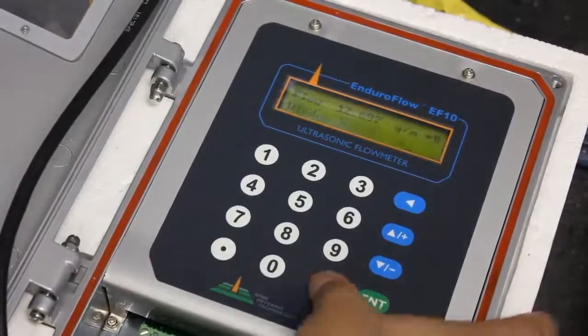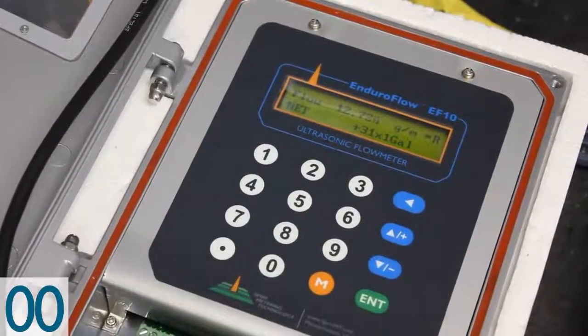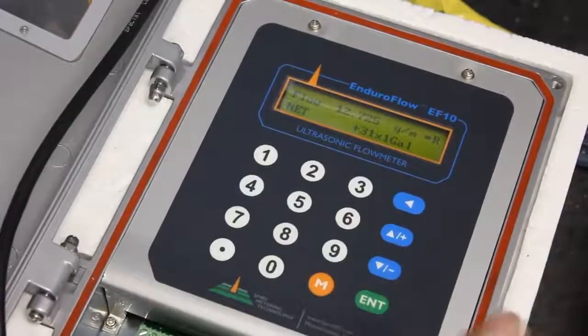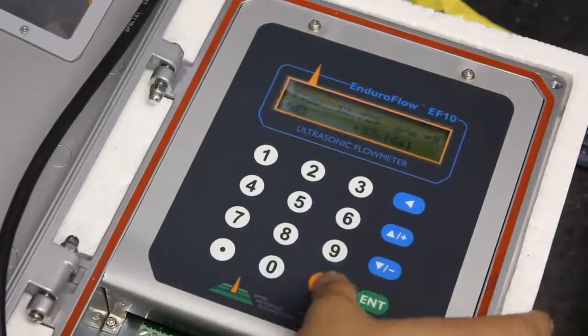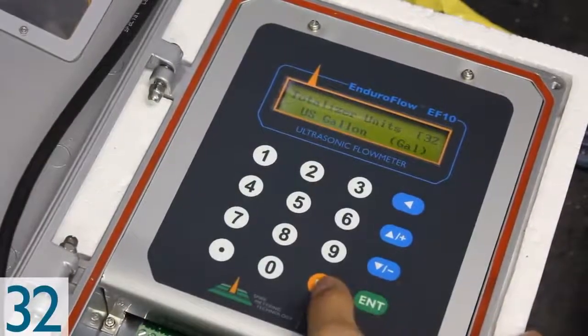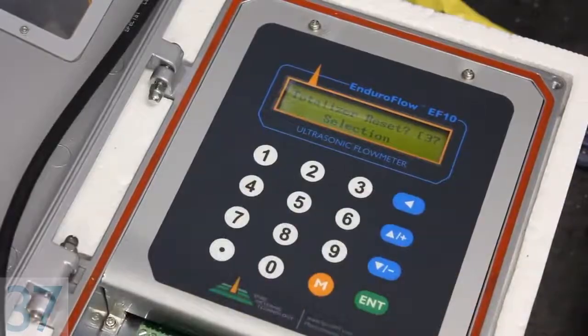If you wanted to change the unit, you just go to menu 32, change the unit. Go to menu 37 if you want to reset the totalizer.